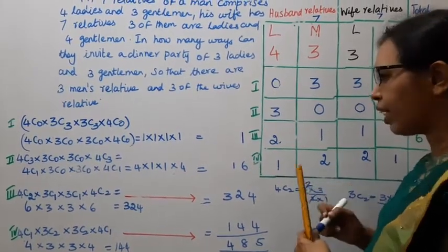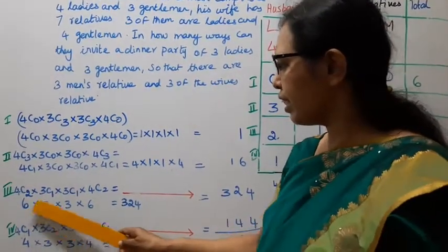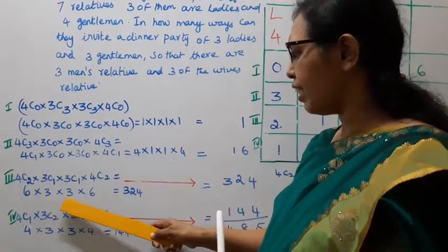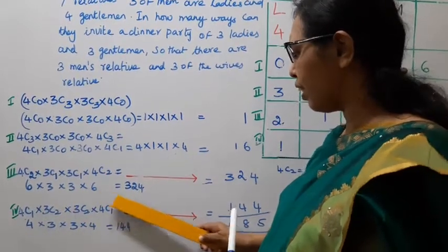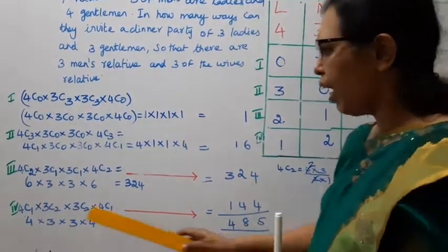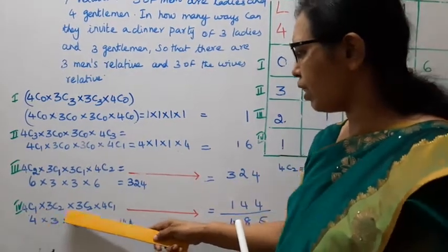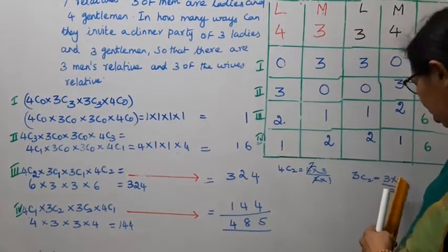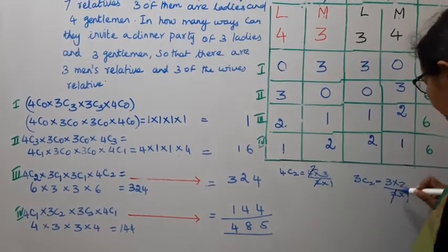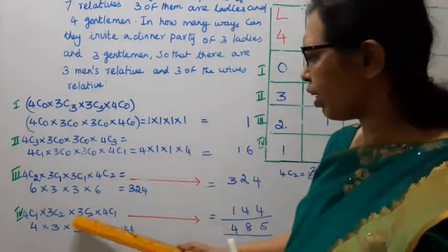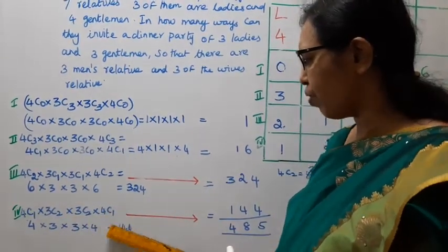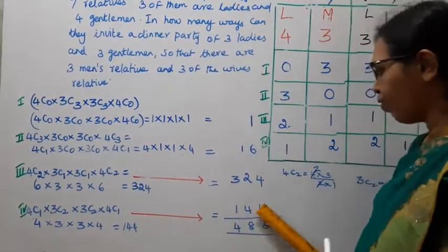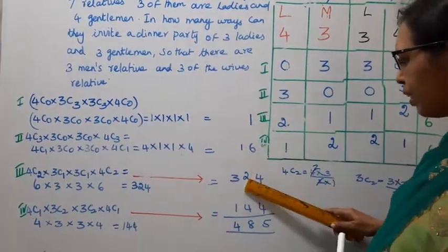6C3, 4C3 gives 18. 18 times 18 are 324. 324 will be one value. After that, 4C1 into 3C2, then 4C1 into 3C2: 3C2 is 3 into 2 by 2 into 1, cancel to get 3. So 3C2 is 3, 4C1 is 4, 4 times 3 is 12, then 3 times 4 is 12, and 12 times 12 is 144.